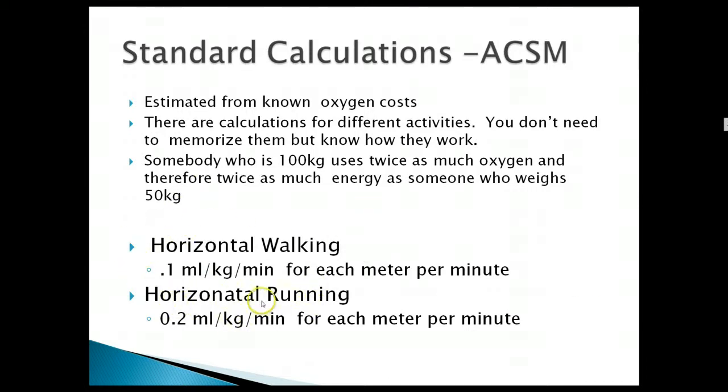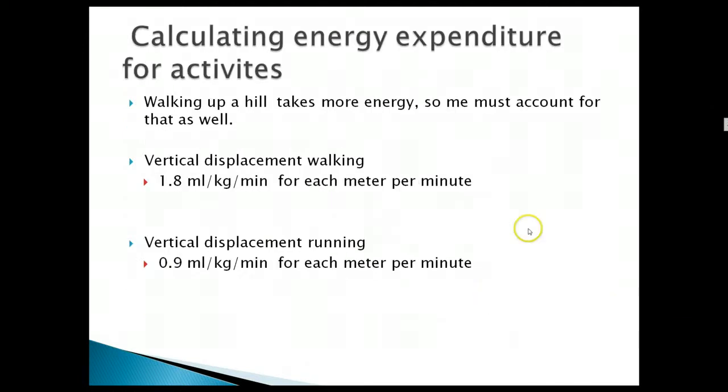Then you've also got horizontal running. And it's 0.2 milliliters per kilogram per minute for each meter per minute. And again, if you can calculate the total amount of oxygen used, you can calculate the total number of METs and the total number of calories.